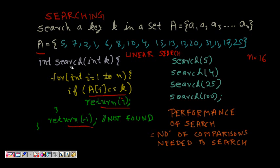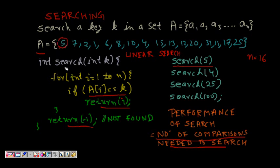Now we want to see the best case performance. We measure performance of this searching algorithm in terms of the number of comparisons made. In the best case, say we search for 5: starting at i equal to 1, if k is 5 and a[1] is 5, we find the key in the very first element itself. So the best case requires only one comparison.